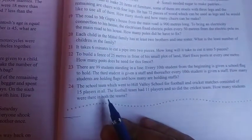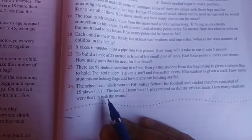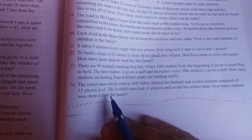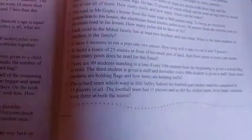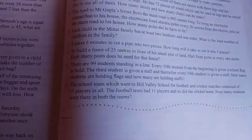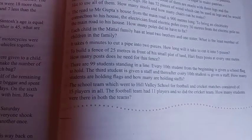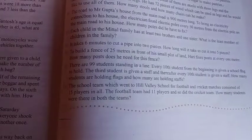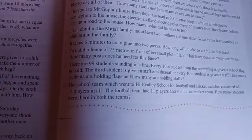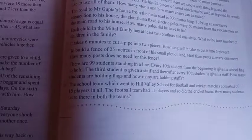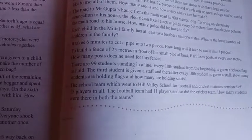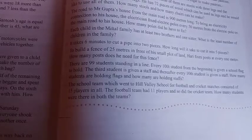Now the final question of this chapter is: The school team which went to Hill Valley School for football and cricket matches consisted of 15 players in all. The football team had 11 players and so did the cricket team. How many? Okay, ab kya bataya raha? Ek kya ho gaya, koi school team thi, kisi school mein gayi, kuche football aur cricket matches kheli hai. Aur total jo bachche the, they were 15 bachche the. Us mein se 11 bachchon ne football khela and so did the cricket team. Okay, ab mein yeh batana hai ki aise kitne bachchon ne dono matches khele.